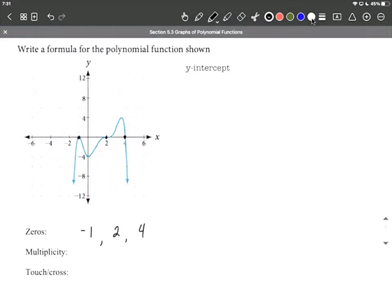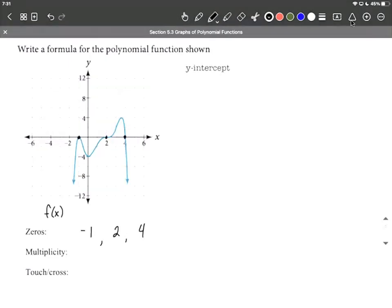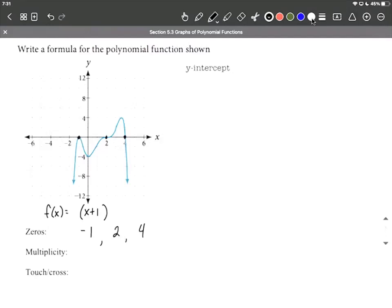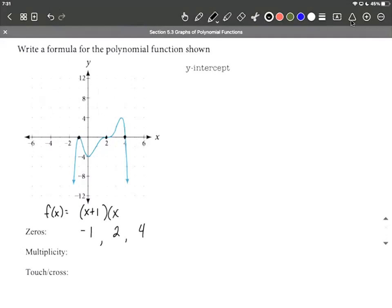Now zeros go hand in hand with factors for a function. So I'm going to call our function f of x. If we have a zero at negative one, that means that x plus one is going to be a factor, because if I replace the x in this factor with a negative one, negative one plus one makes zero. That's why we call them zeros. It's going to have to be x minus two for our next factor and x minus four for the last one.